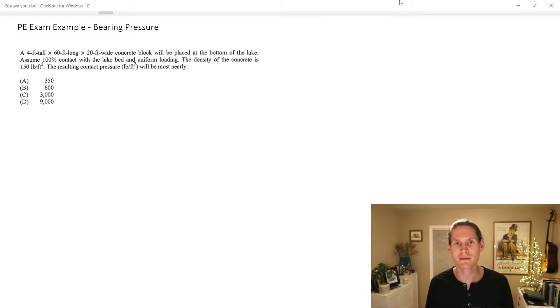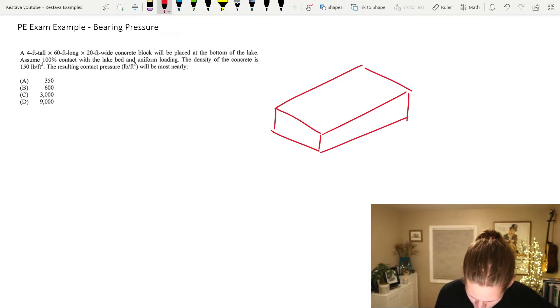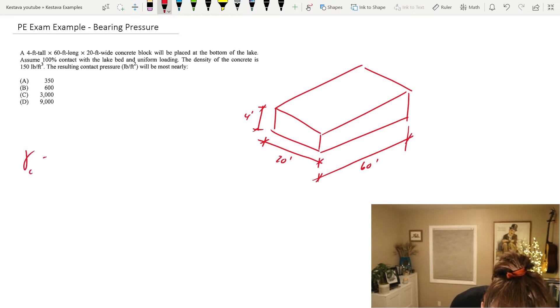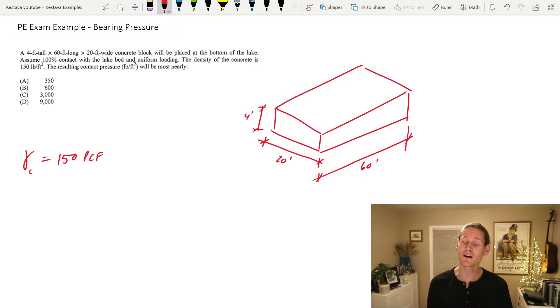So we'd start out this problem like anything else. Take the information and let's try to draw a picture with it. That means we have our beautiful cube of concrete that they are going to dump and have sink down to the bottom of the lake. Four feet tall, 20 feet wide, and 60 feet long. Assume 100% contact with the lake bed and uniform loading, so there's not any hot zones or high stress points. The density of concrete given is 150 pounds per cubic foot PCF. The other density that we need is the density of water.